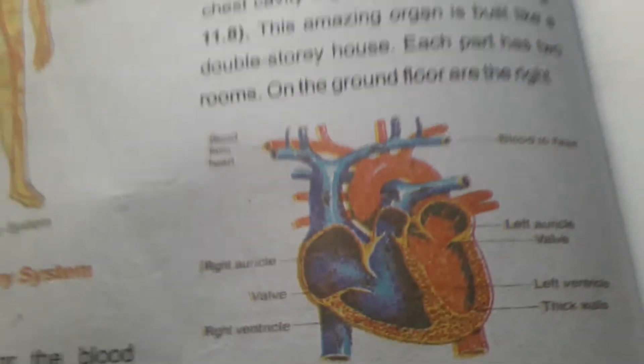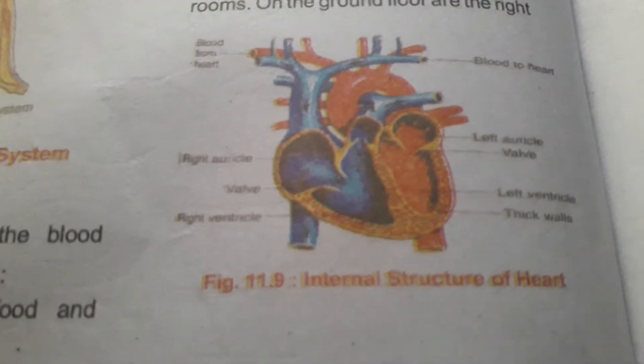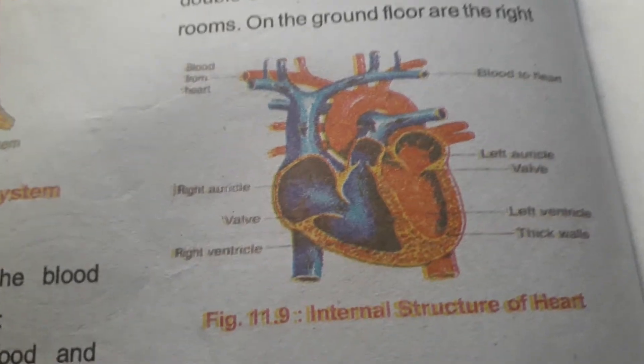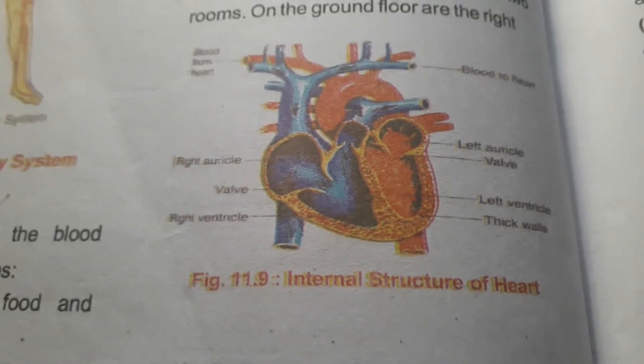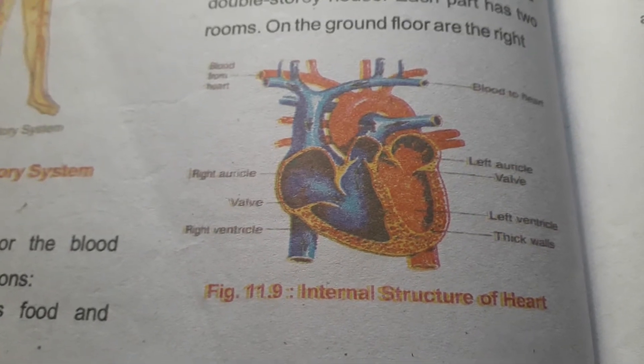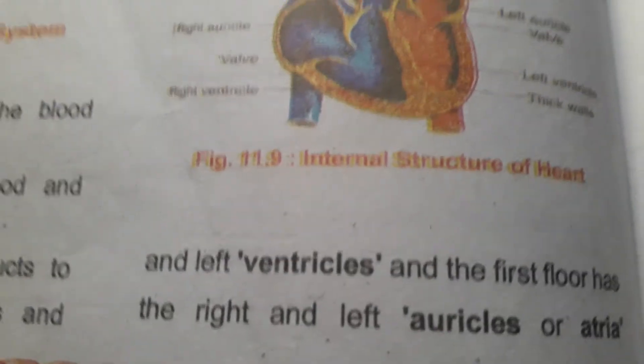The human heart is built like a double-story building and it consists of 4 chambers. There are 2 auricles and 2 ventricles. The upper chambers are called auricles, and the lower chambers are called ventricles.